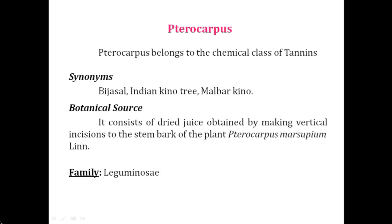Next is the biological source. Pterocarpus is nothing but a dried juice. The biological source is a dried juice obtained by giving a vertical incision to the stem bark of the plant. So a vertical incision is given to the stem bark portion to obtain the secretion. Three key things to remember: first is dried juice; second, it is obtained by giving a vertical incision; and third, from the stem bark of the plant.